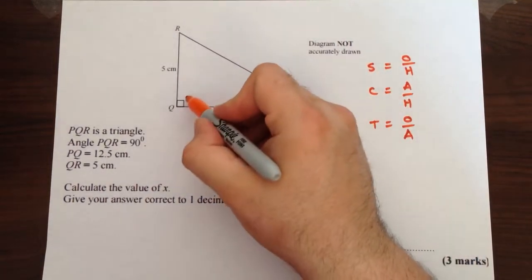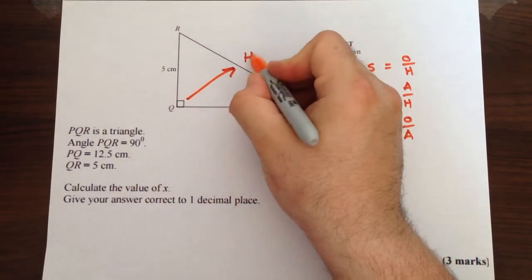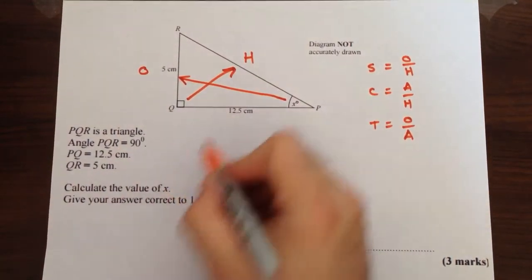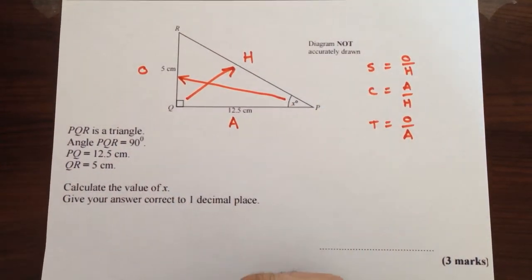Now we label the sides. So starting from the right angle and going away, that's the hypotenuse. Starting from the angle you're given and going away, that's the opposite. And the one that's left is the adjacent.